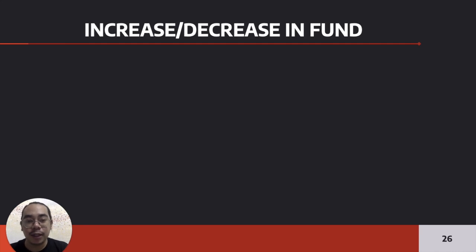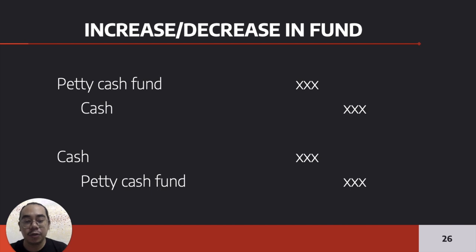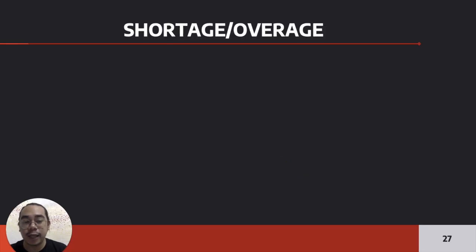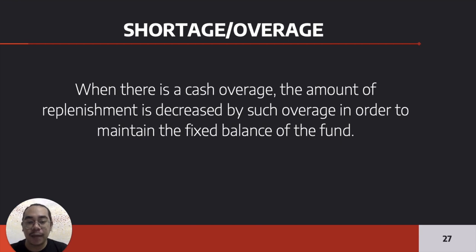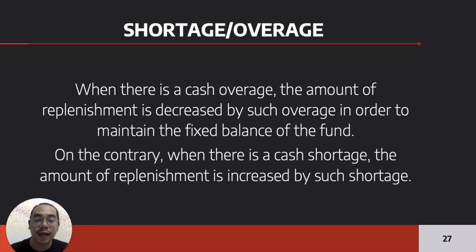If you increase the fund: debit petty cash fund, credit cash. If you decrease the fund: debit cash, credit petty cash fund. What if there is a shortage or overage? If there is an overage, the amount of replenishment is decreased by the overage to maintain the fixed balance. If there is a cash shortage, the amount of replenishment is increased by the shortage. For example, if the replenishment is 10,000 and there is a shortage of 1,000, the total to be replenished is 11,000.